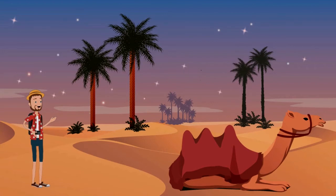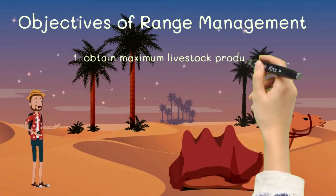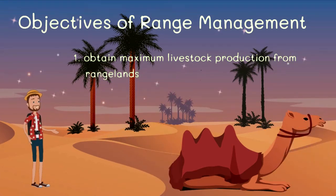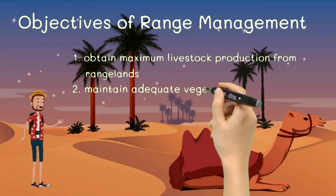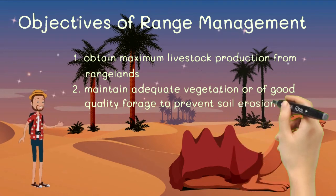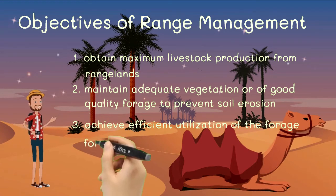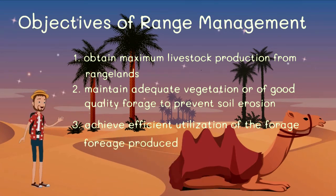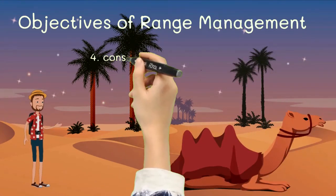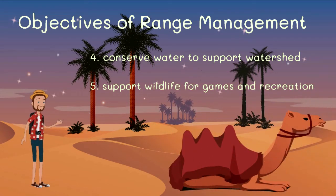The objectives of range management are: to obtain maximum livestock production from the rangelands, to maintain adequate vegetation of good quality forage to prevent soil erosion, to achieve efficient utilization of the forage produced, to conserve water, to support watersheds, and to support wildlife for games and other recreational activities.